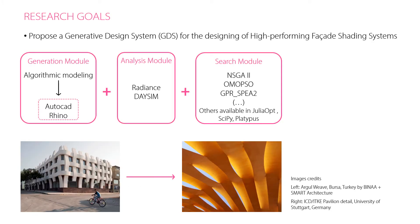The goal of this research was to propose a new generative design system that helps architects design shading systems that are high-performing regarding daylight. The tool should support architects not only to explore the aesthetic value of using weaving patterns in facade design, but also using weaving as a way to shape the day-lit environment of indoor spaces. The generative design system has three models.